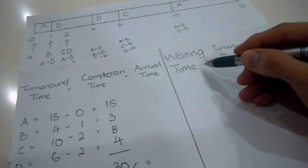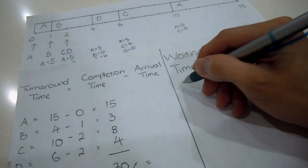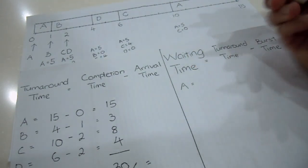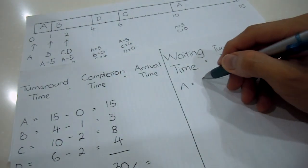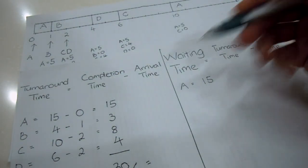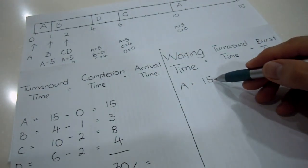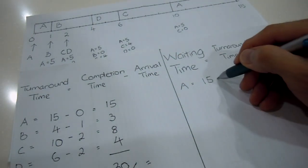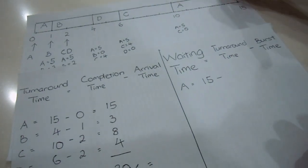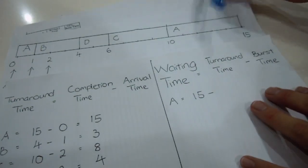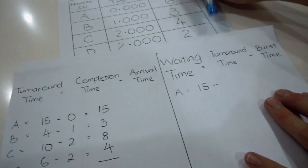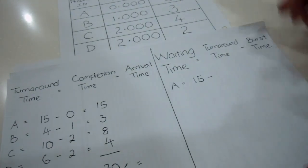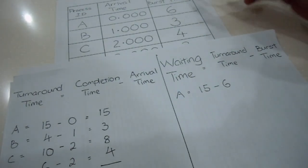Let's start to get the waiting time for A. What's my turnaround time for A? Since I already got it here, I just move the data over - 15. And my burst time for A, I track back to the table. The burst time here is 6 milliseconds.